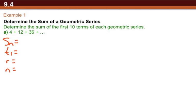We know from looking at the series that t1 should be 4. We can find what r is. To go from 4 to 12 to 36, we multiply by 3 each time. n is given in the text part of the question, that's 10. And Sn is what we're trying to find.